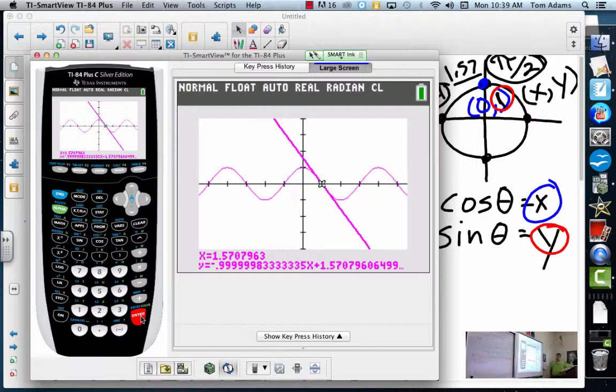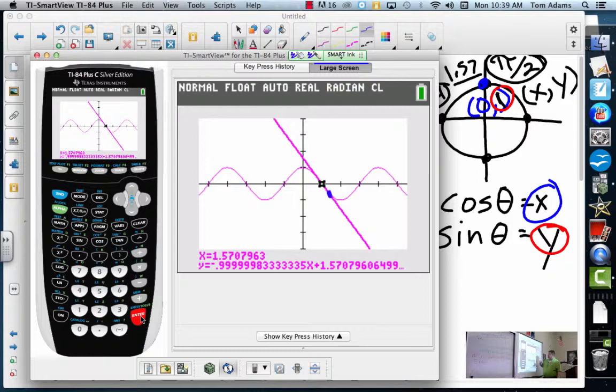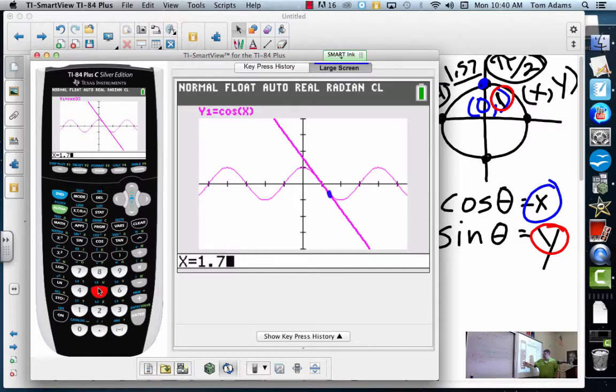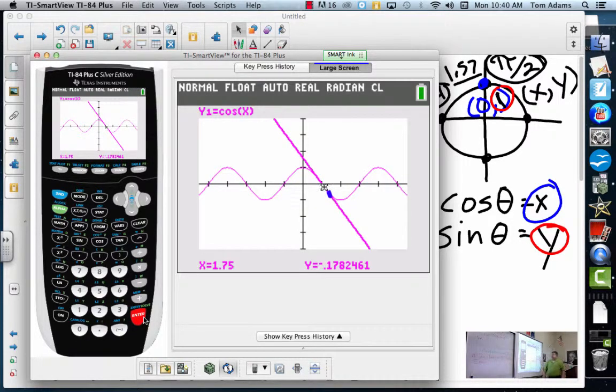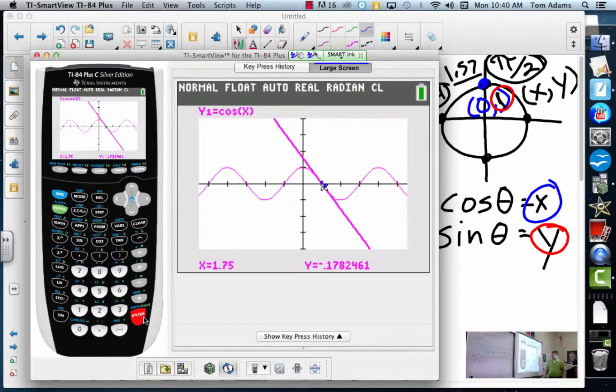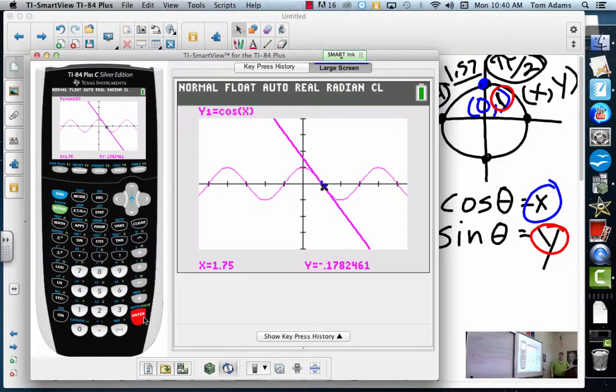Does that make sense? So my 1.75 is about right here. So now when I hit trace and I put 1.75, it's even closer than that. See how close it is? You can barely see it, but the original π/2 is like right here, and this is where we are. But do you see how the two values are very close?